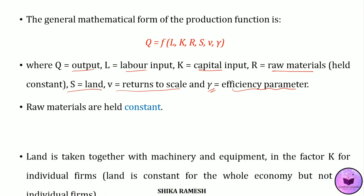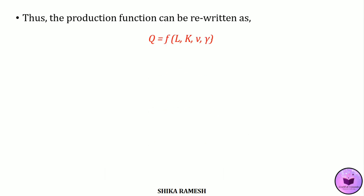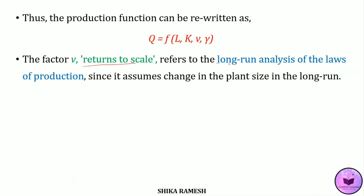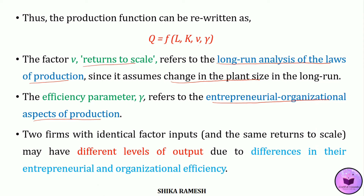Land is taken together with machinery and equipment, that is with factor K, because for the whole economy land is constant, but for individual firms land is not constant since in the long run individual firms can acquire more land. Raw materials are held constant. So the production function is rewritten as Q = f(L, K, V, γ). Here V represents returns to scale, referring to the long-run analysis of the laws of production, since in the long run the plant size is assumed to change. The efficiency parameter γ represents the entrepreneurial and organizational aspects of production — two firms with the same factor inputs can produce different levels of output due to differences in entrepreneurial and organizational efficiency. In simple terms, the efficiency parameter represents the managerial skills of the firm.